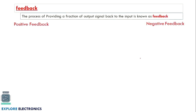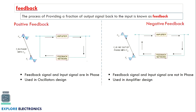Feedback is a very important concept in the design of oscillators. Feedback is providing a fraction of the output signal back to the input of the amplifier. There are two kinds of feedback: positive feedback and negative feedback. In positive feedback, the input signal and the feedback signal arriving at the input are in phase. If they are out of phase, that is negative feedback. Positive feedback is used in oscillator design; negative feedback is generally used in amplifier design.